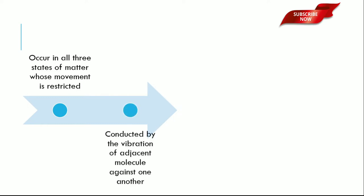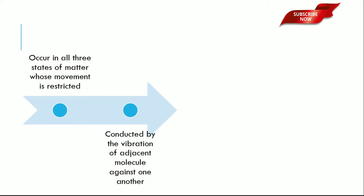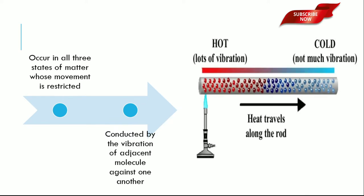Conduction occurs in all three states of matter - solid, liquid, and gases - whose movement is restricted. But in solids, conduction primarily takes place because all the atoms or molecules are in close contact with each other. Heat transfer occurs as a result of vibration of adjacent molecules against one another. Hot end molecules vibrate more quickly than the cold end. Such vibration is passed on to the nearer molecules, causing them to vibrate faster and heating them up.